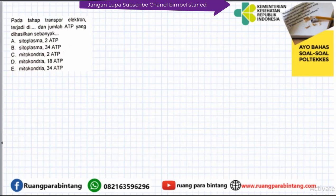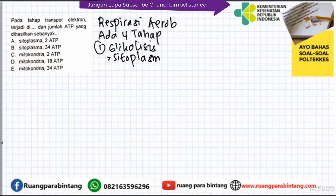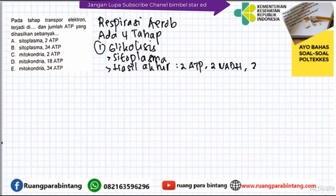Sistem transport elektron adalah bagian dari respirasi sel aerob yang memiliki 4 tahap. Yang pertama adalah glikolisis, yaitu reaksi yang mengubah glukosa menjadi asam piruvat. Glikolisis adalah satu-satunya tahap yang terjadi di sitoplasma. Hasil akhirnya: 2 ATP, 2 NADH, dan 2 asam piruvat.